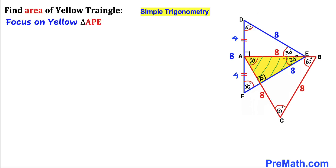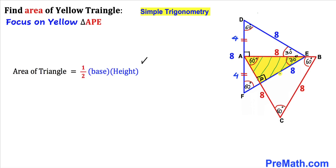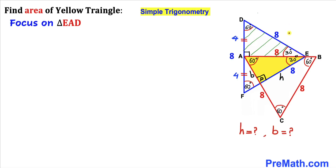Now let's recall the area of a triangle formula: area equals one-half times base times height. I'll call this side length H for height and this side length B for base. We are going to find the values of height H and base B.